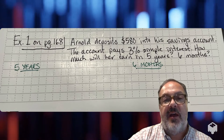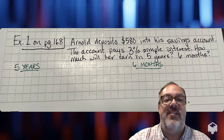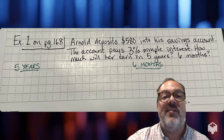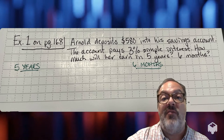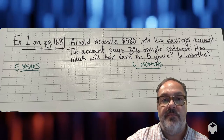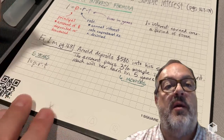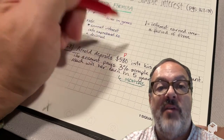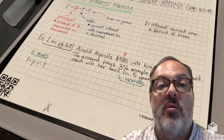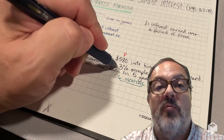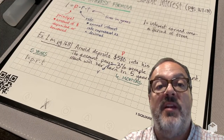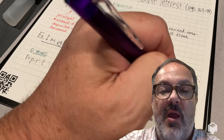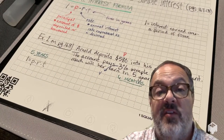This is examples one and two on page 168. Arnold deposits $580 into a savings account. The account pays 3% simple interest. How much will she earn in five years, and in six months? So let's start out with our formula: interest equals principal times rate times time. In example one the time is five years, and in example two it's six months.